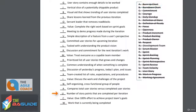Number of story points completed per iteration — this is the team's velocity. This is how many story points they're actually able to get through in design, solution, test, and have ready for release at the end of that sprint. This helps you plan your future sprints when you have an understanding of what your velocity has been on previous sprints.